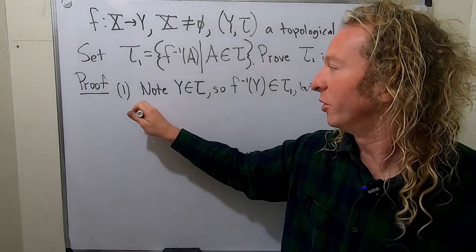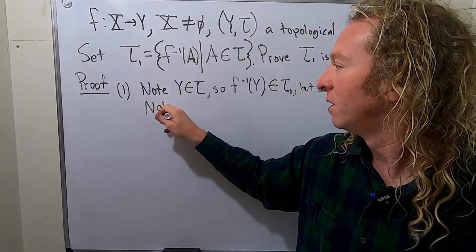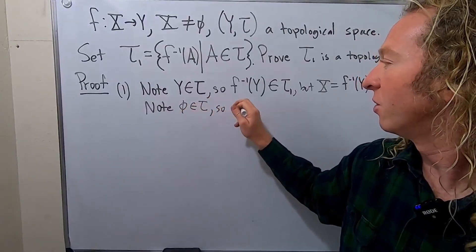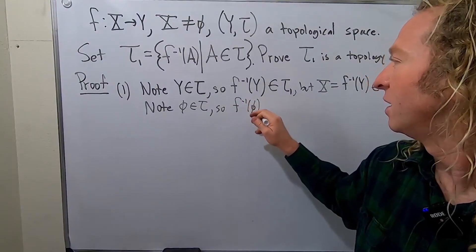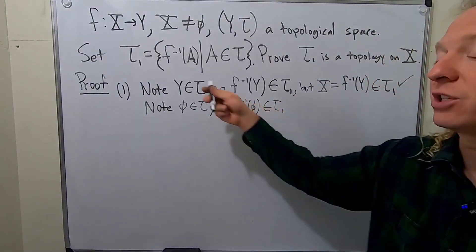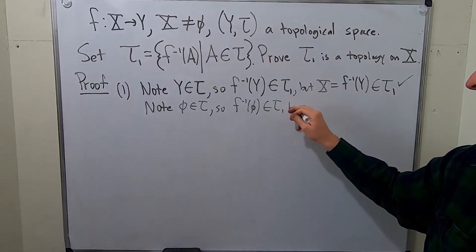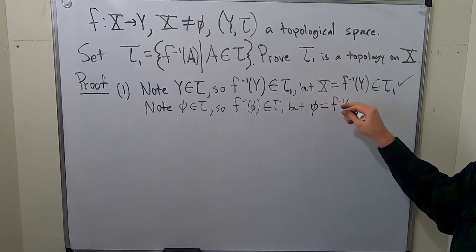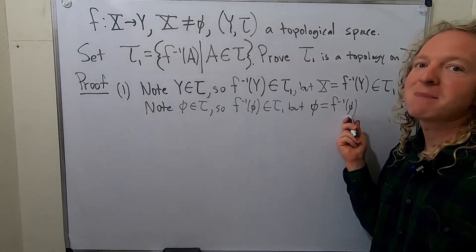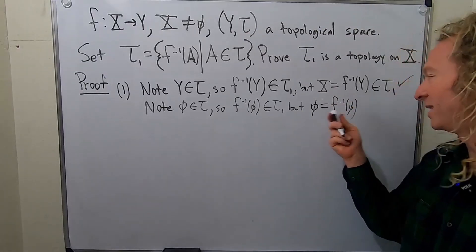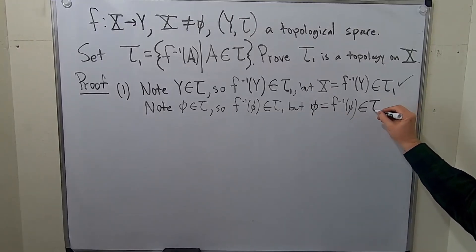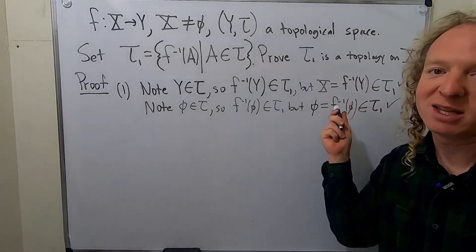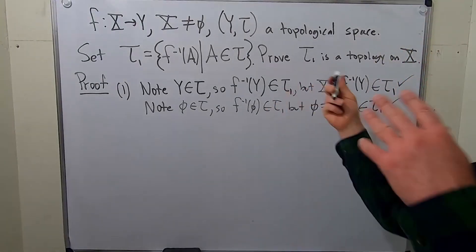Now we show the empty set is in tau 1. The empty set is in tau, because tau is a topology on Y. So the inverse image of the empty set is in tau 1 by definition of tau 1. But f inverse of the empty set equals the empty set — there are no elements that get mapped to the empty set. So the empty set is in tau sub 1, and the first condition is satisfied.